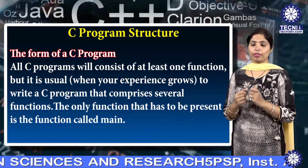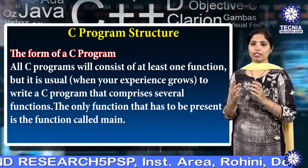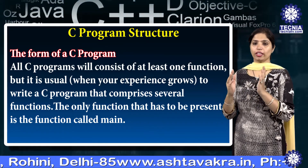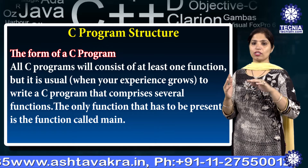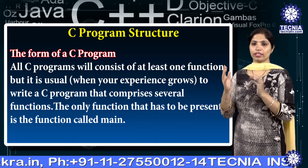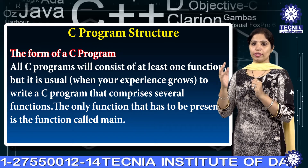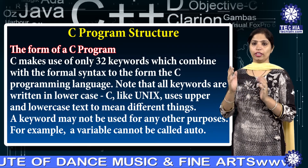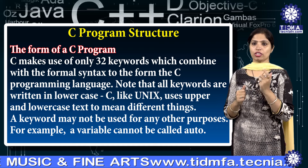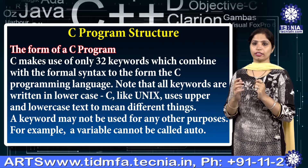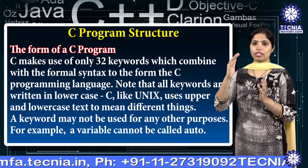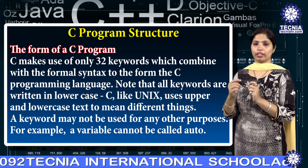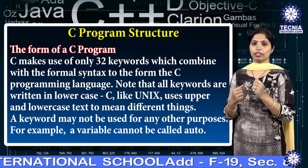The form of a C program: all C programs will consist of at least one function, but it is usual to write a C program that comprises several functions. The only function that has to be present is the function called main. C makes use of only 32 keywords which combine with the formal syntax to form the C programming language.